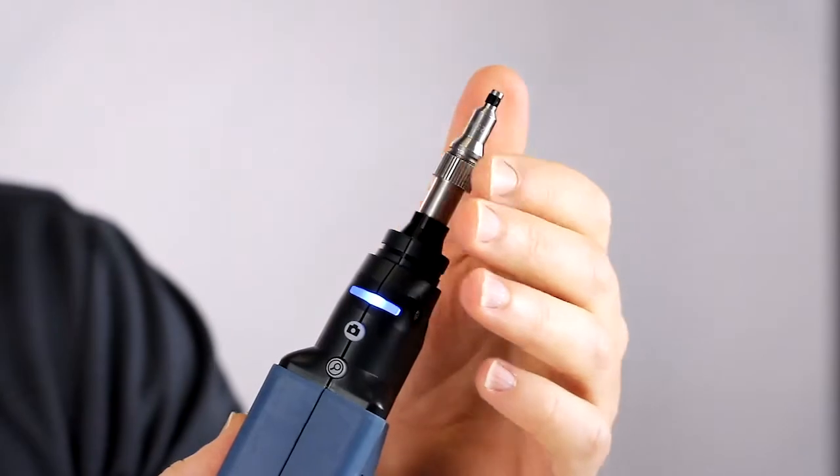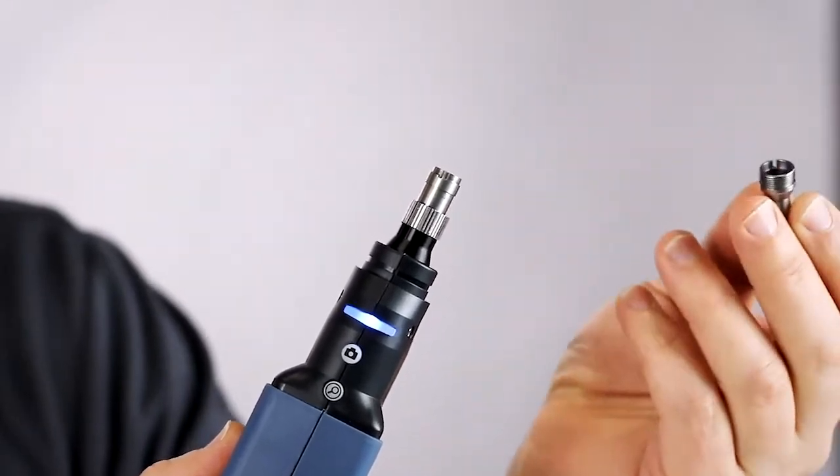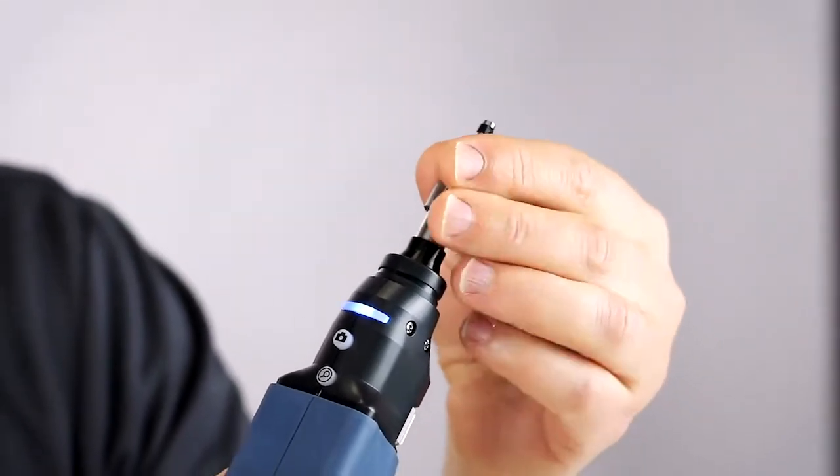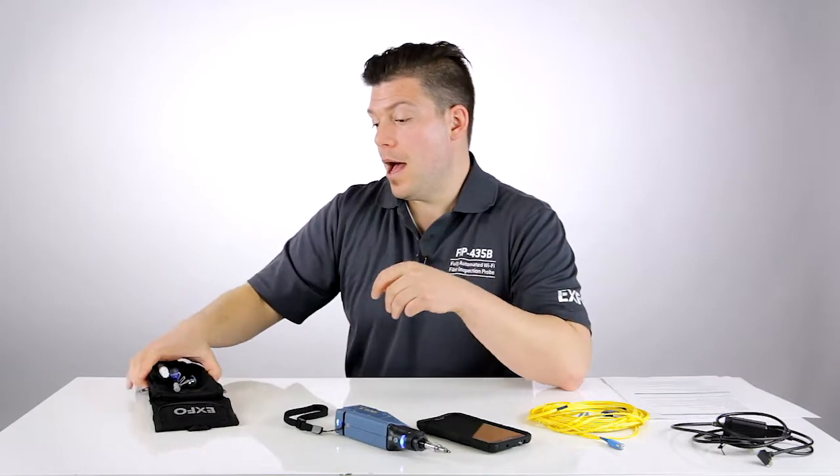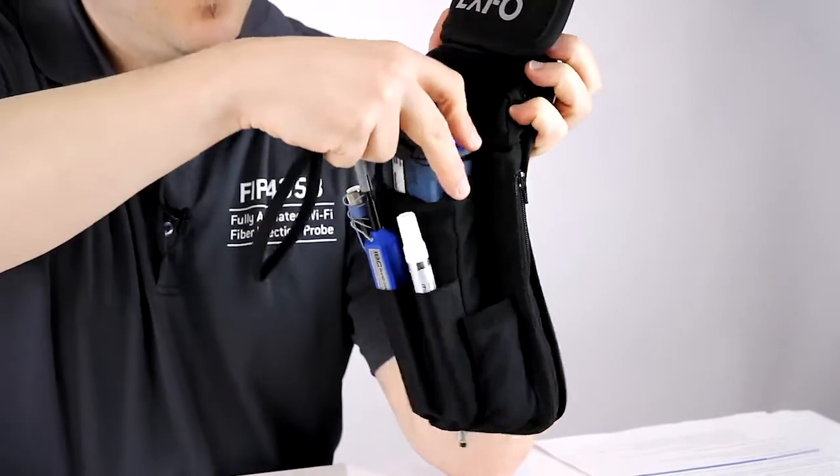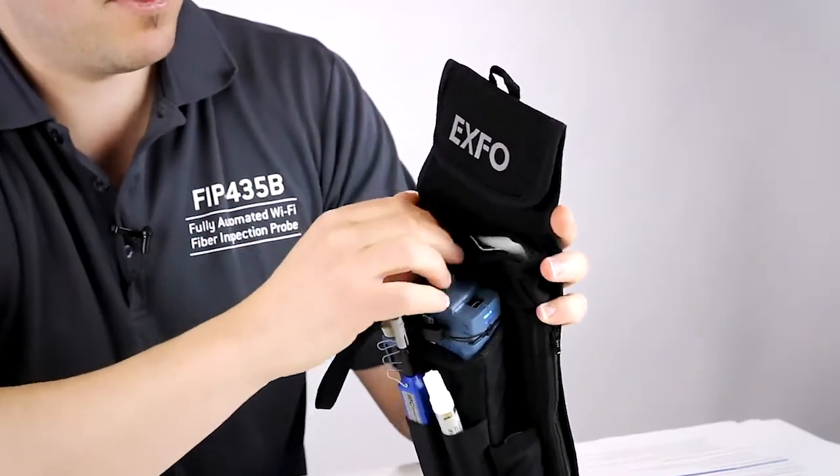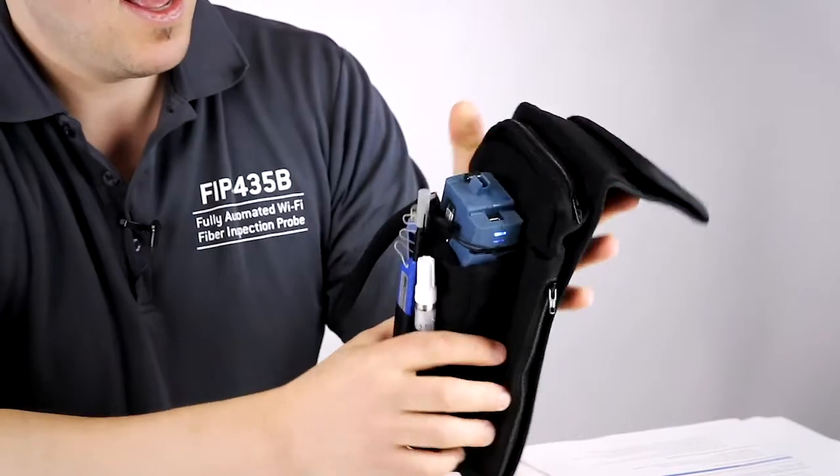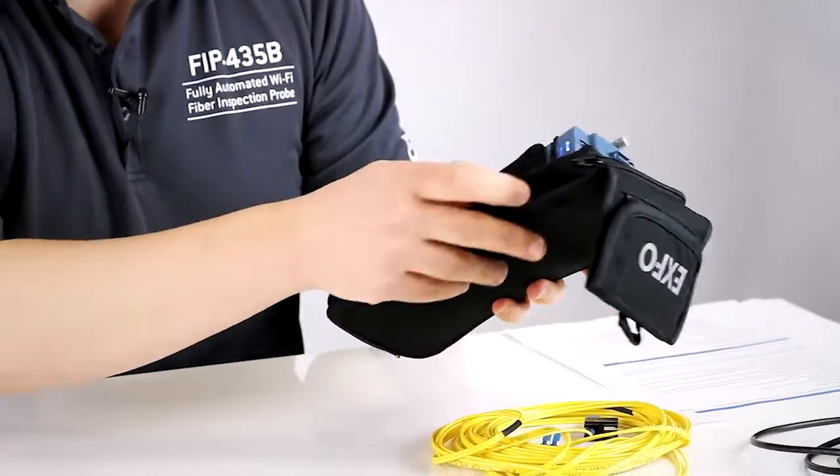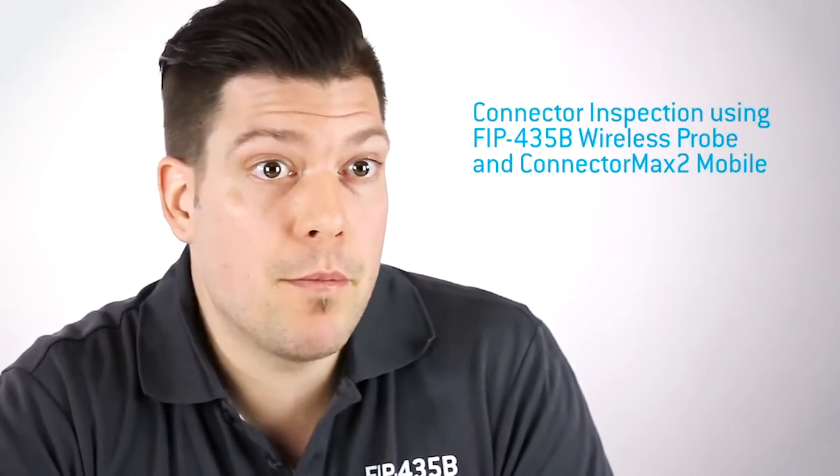Another thing interesting is about the inspection tips. Those tips are also compatible with the previous tips of the FIP 400 and 400B, so you don't need to buy new tips if you go with that new wireless inspection probe. In terms of accessories, we also offer an option with the probe, what we call the belt holster. It's basically a pouch where you can fit the inspection probe right here and put all your cleaning supplies, a VFL pen, your inspection tips, and also a pouch in the back where you can fit the cell phone, so you're ready to go with that on your belt for doing your inspection day.